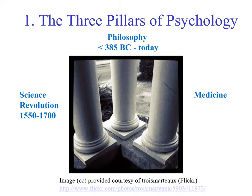Psychology did not evolve out of a vacuum. There were three essential pillars that helped build psychology. One of those pillars, the longest standing pillar, was philosophy. From the time of Aristotle to today, philosophers have helped shape the scope and discipline of psychology. They've been interested in the concepts of the mind, and in particular how we store and represent information. They've also been interested in topics such as emotion and how it relates to our thinking.